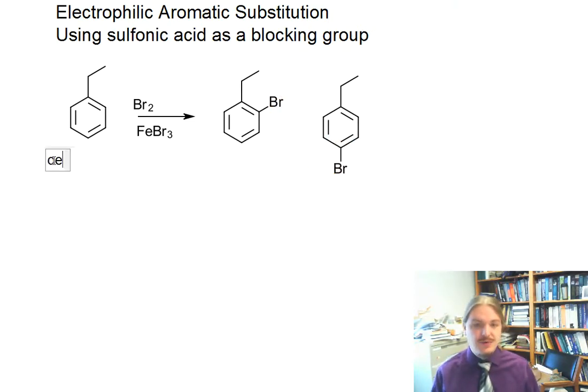The ethyl group on ethyl benzene is an ortho para director. When you react it with bromine and iron tribromide, you get the ortho and the para product.